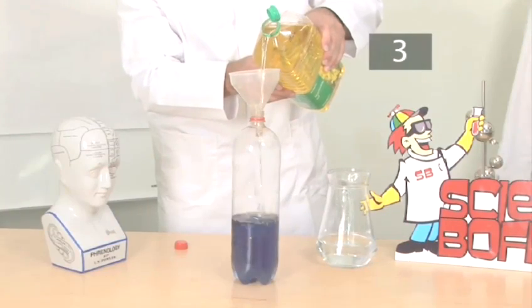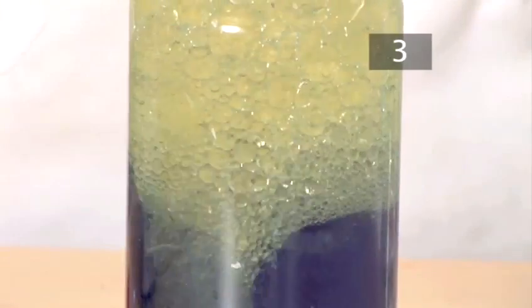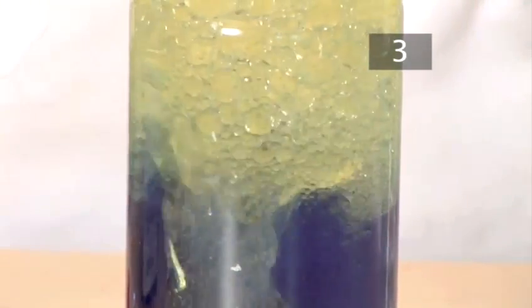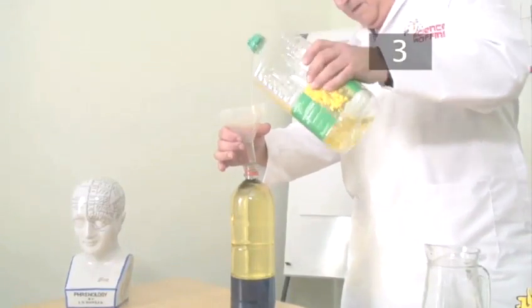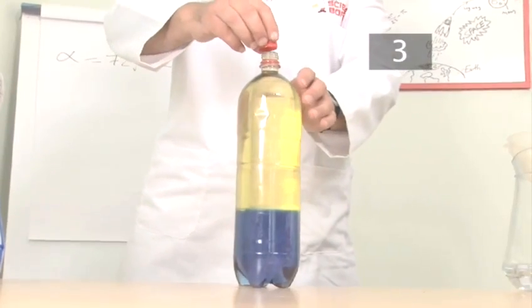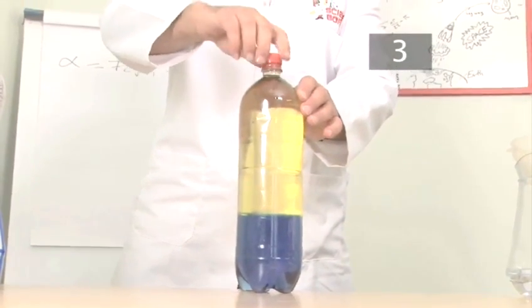Now top up the bottle with cooking oil. Use the funnel to make it easier. Put the lid on as tight as it will go. You don't want to make a mess and make your mum cross.